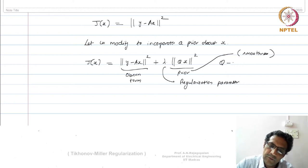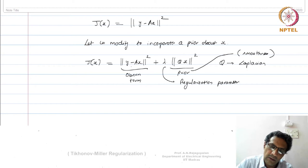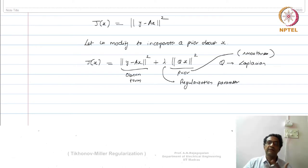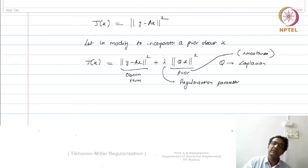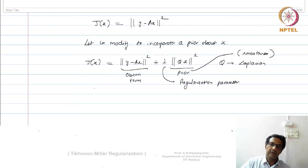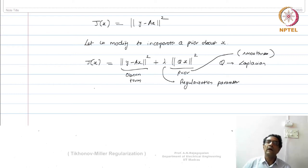So this Q will actually enforce that. One form of Q could be a Laplacian operator, which insists that the x you are trying to estimate should not only follow the observation model but also follow the prior to some extent depending upon λ. Since Q times x gives you the Laplacian of the image — the second gradient — minimizing it says the image should be locally smooth.